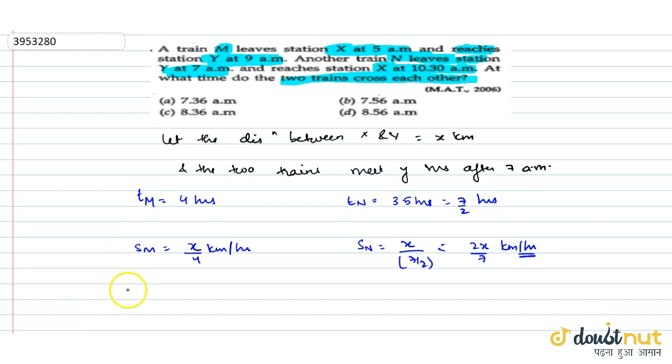Now, distance traveled by m in y plus 2 hours (since it has been traveling from 5 a.m., so in y plus 2 hours the distance m traveled) plus distance traveled by n in y hours.